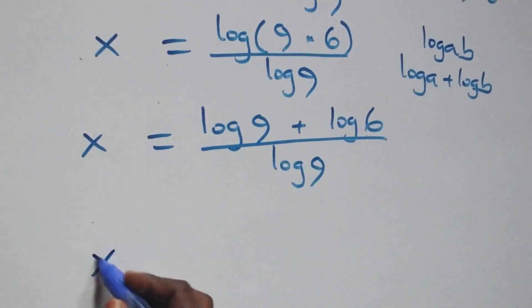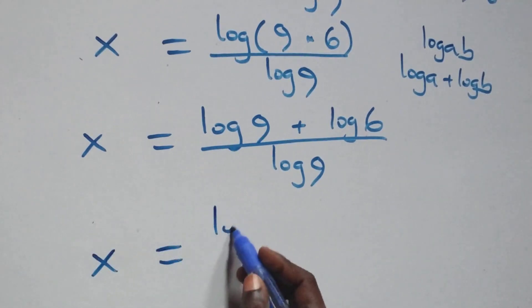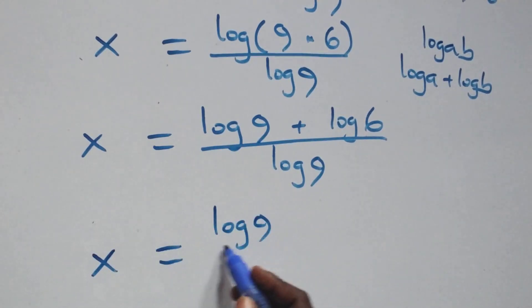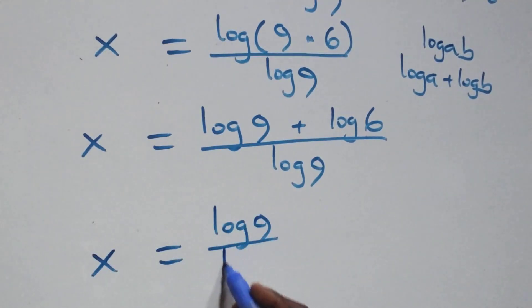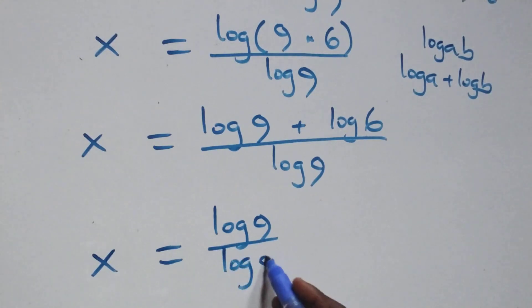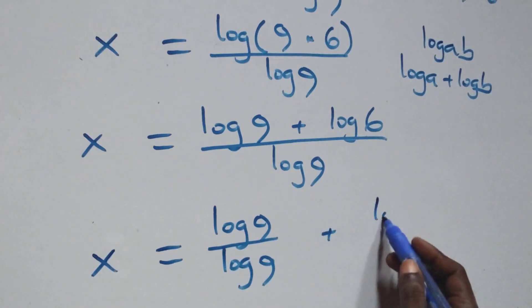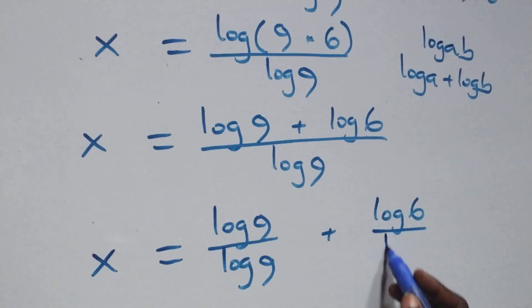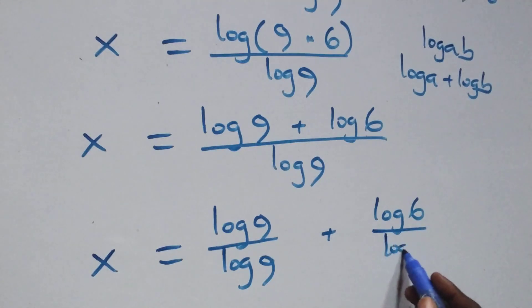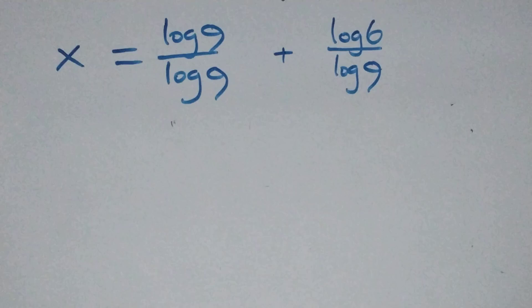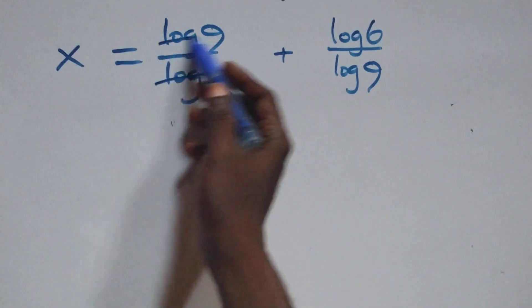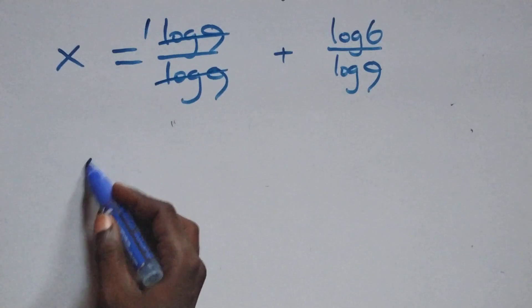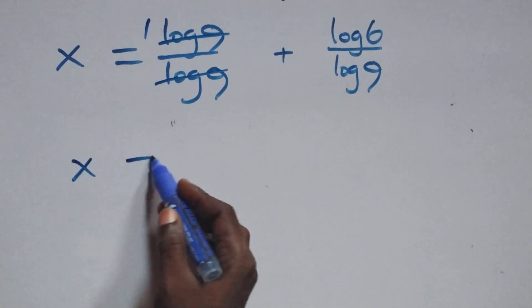Then, next step here, we have log 9 cancels each other. We have one left here, which implies x equals to 1 plus log 6 over log 9.